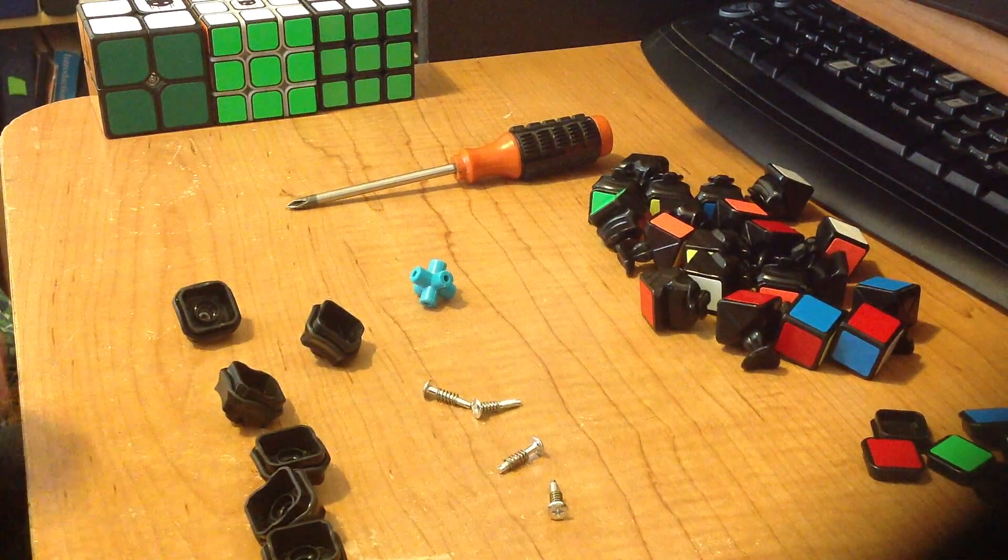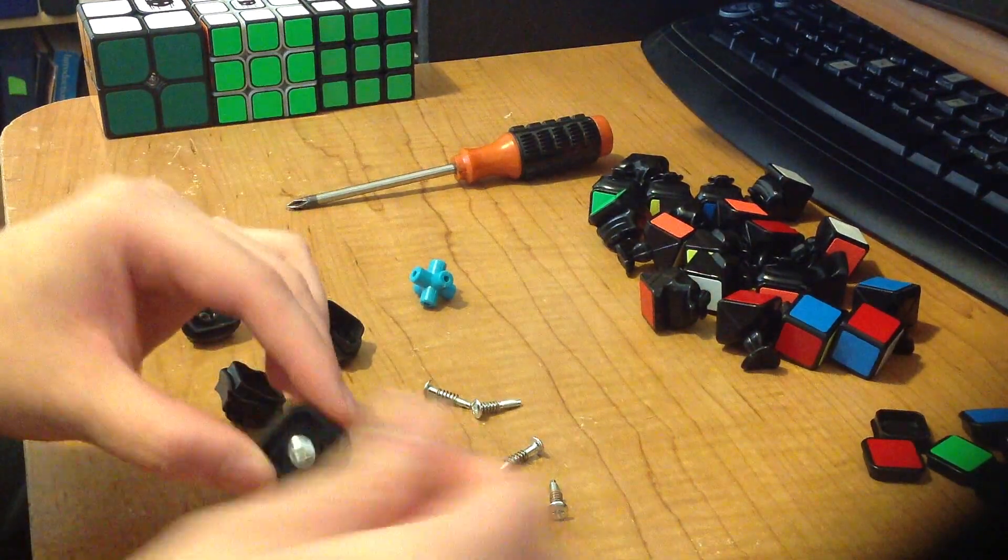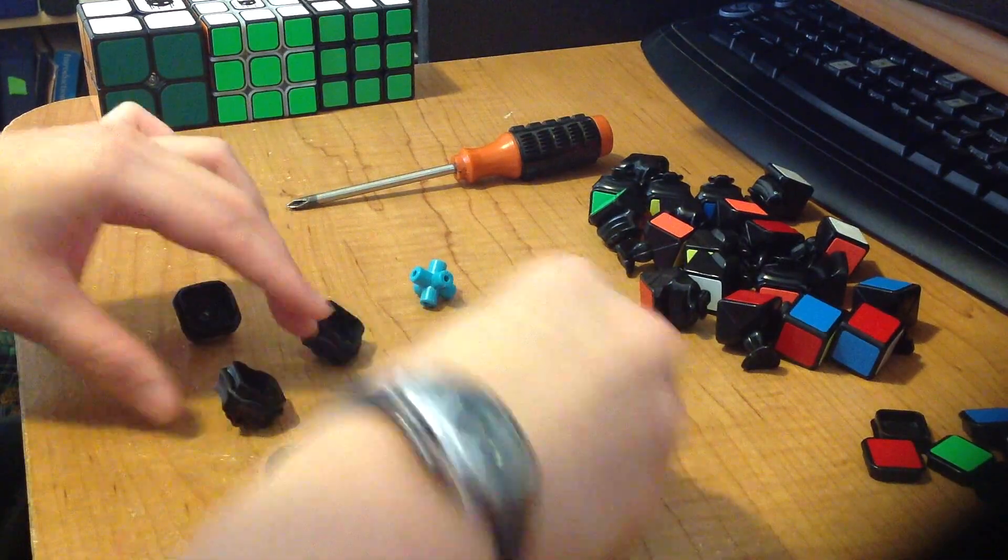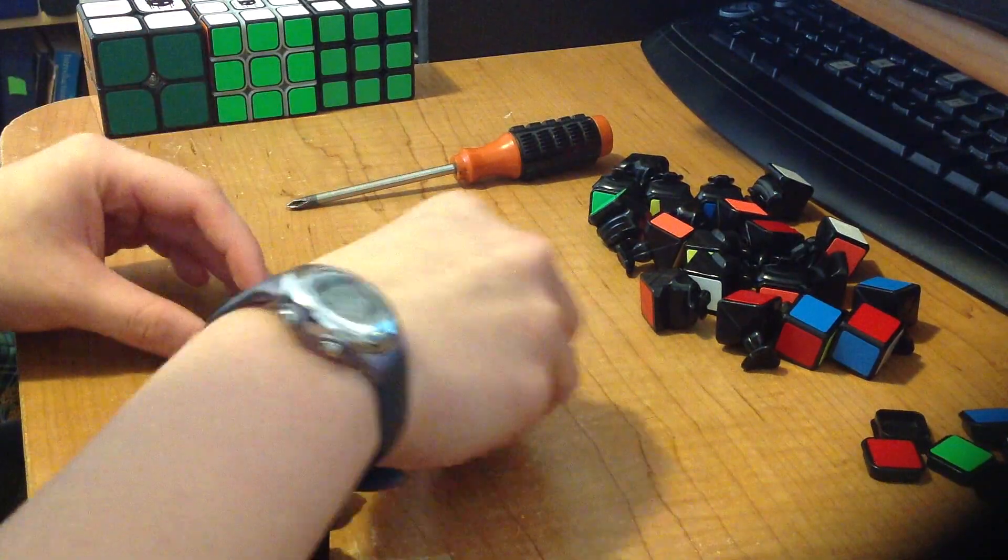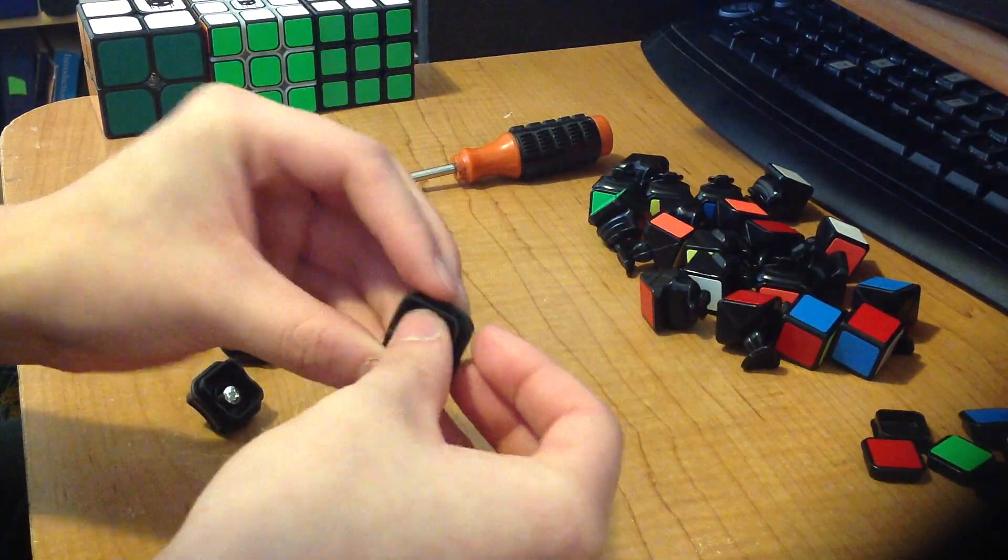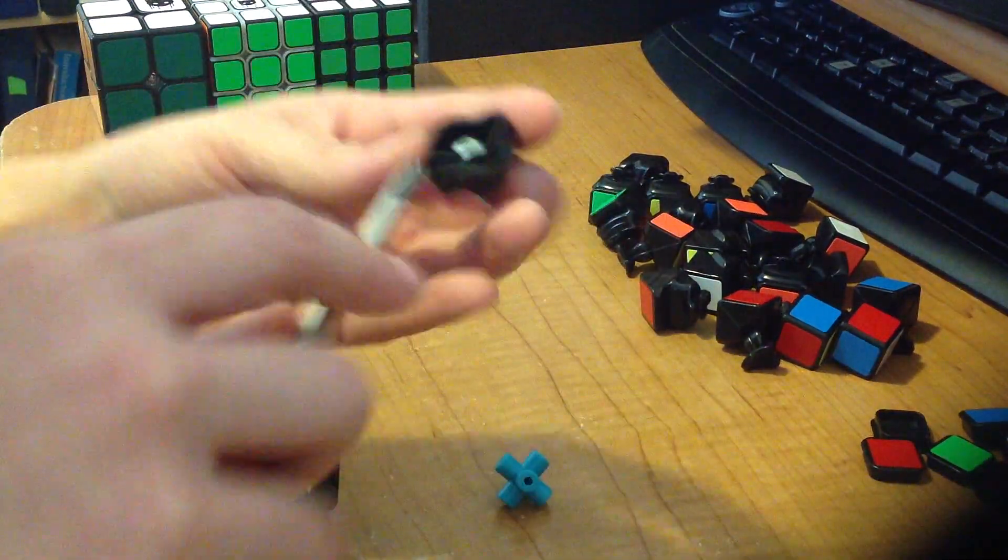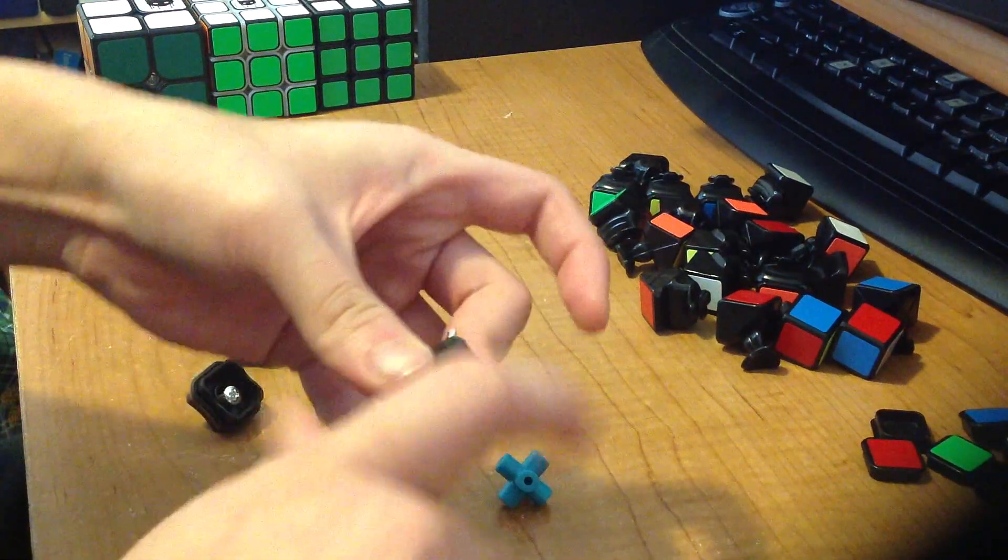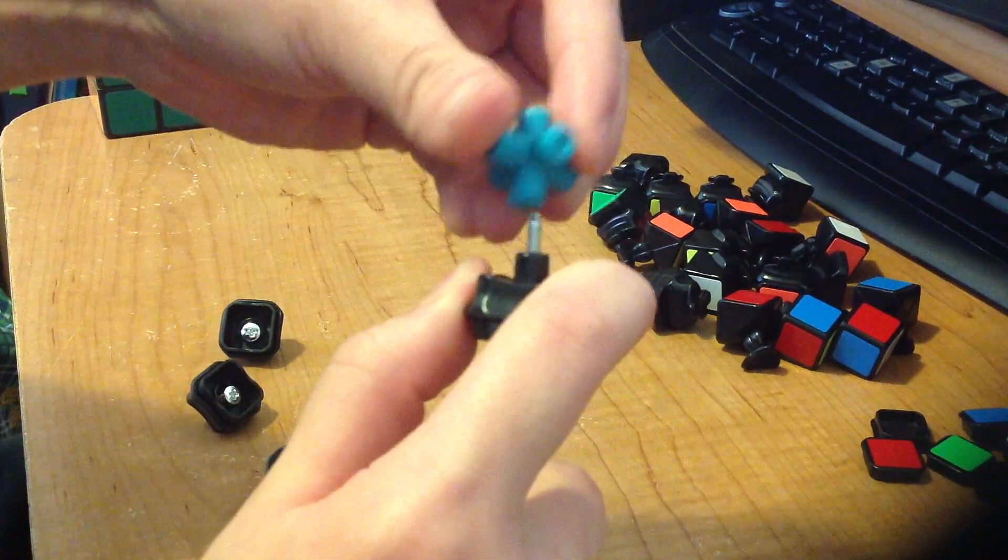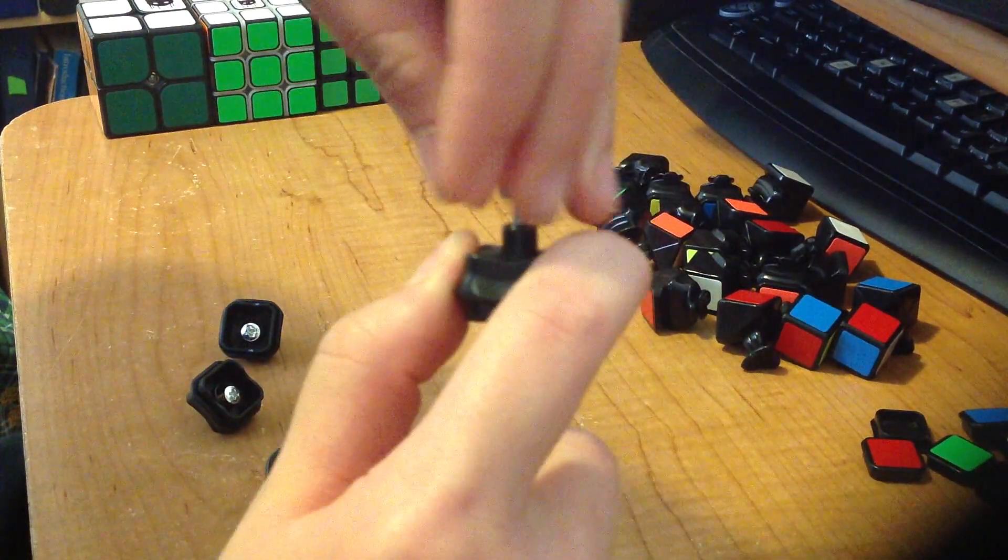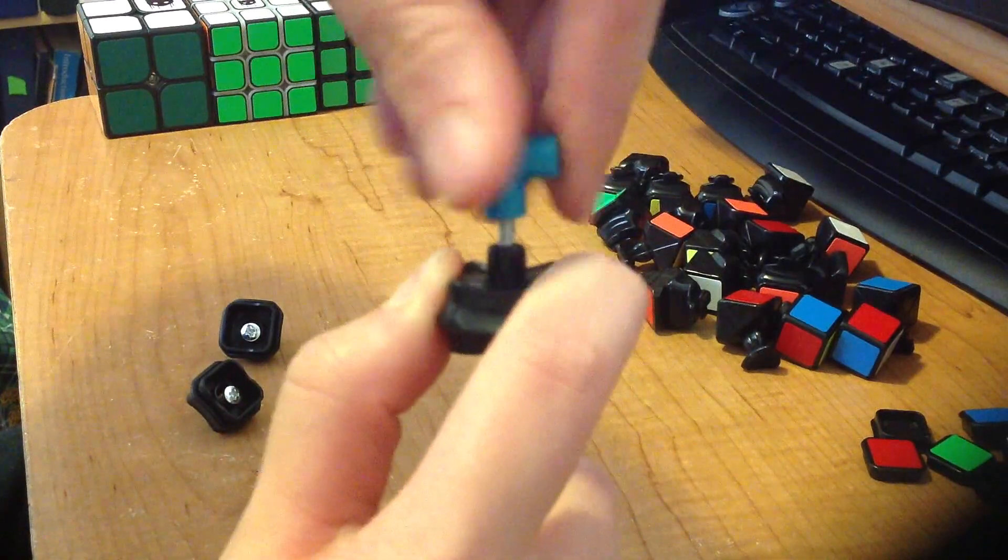So once you have done that, all you do is put a screw and a spring into each of the centerpieces. Like this. And now you just take one of these and then you take your core and your screwdriver. And you do this. I usually just hold it like this. And then I screw the core onto the screw so that it can go in. I know that it will be going in straight.